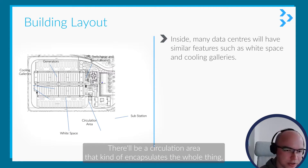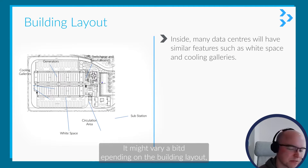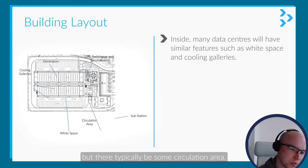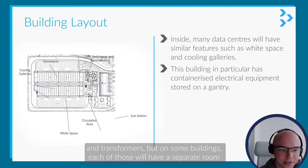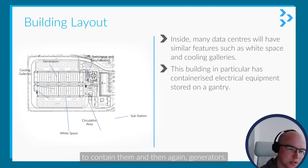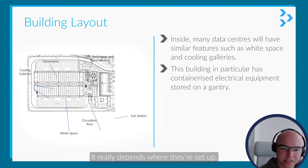There'll be a circulation area that encapsulates the whole thing — a service corridor for people to access and for a lot of services to run. It may vary depending on building layout, but there'll typically be some circulation area. On this particular building they had containerized UPS, switchgear, and transformers, but on some buildings each of those will have a separate room. And then there are generators — sometimes on a gantry system, sometimes inside a separate building or in a utility yard, depending on the setup.